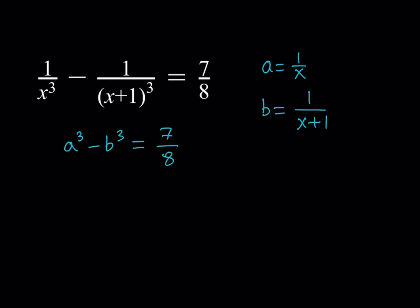Now we have two variables, but I need to associate a and b. Our goal is to go from one variable to two variables but also get two equations — we're basically solving a system of equations. If you look at a and b carefully, the difference of their cubes is given. If you flip them, you get x equals 1 over a, and x plus 1 equals 1 over b.